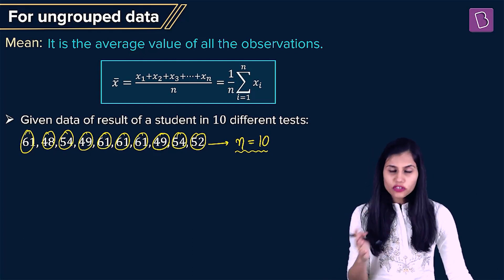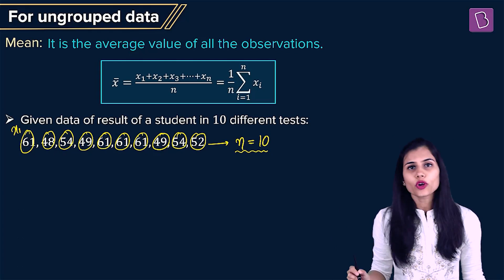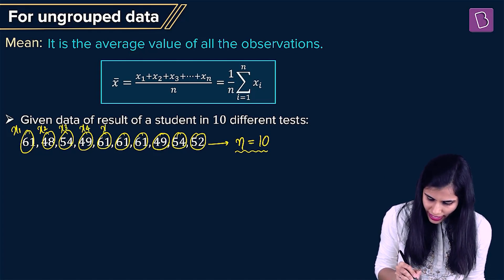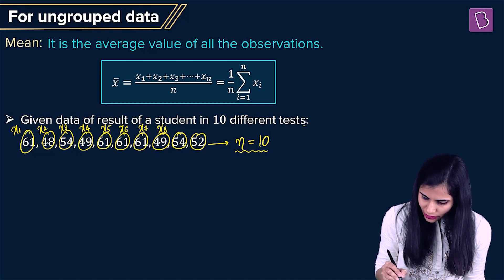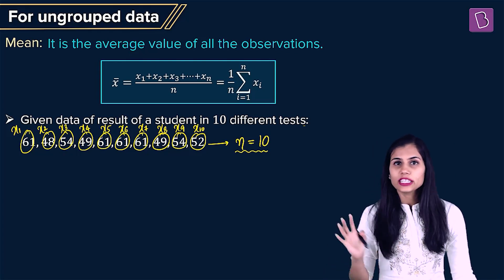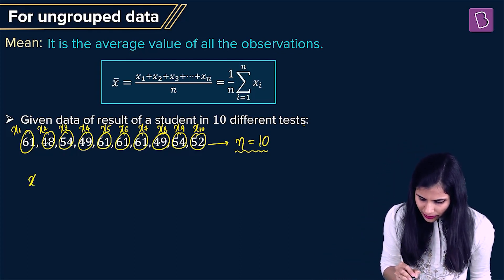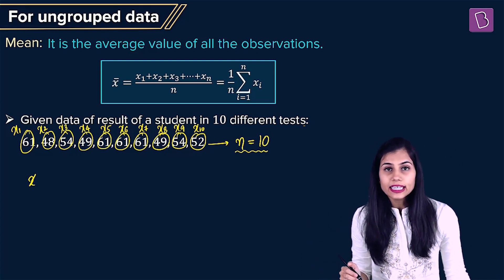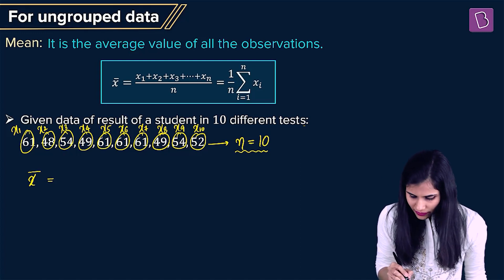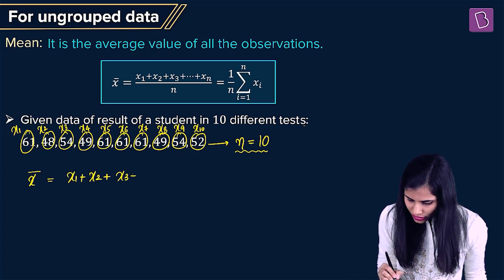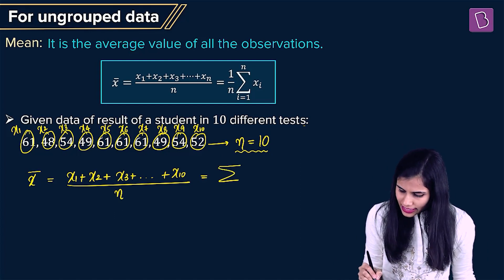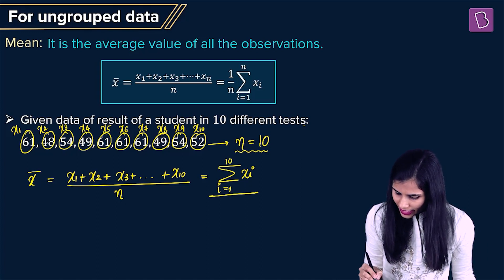Now the explicit value of each of these 10 observations: the value of the first observation x1 is 61, the second observation x2 is 48, and similarly x3, x4, x5, x6, the 7th, 8th, 9th, and 10th observations. It's like there's a random variable x taking up the values x1, x2, x3, up to x10. Then the mean of this data set, denoted by x-bar, equals the sum of all 10 observations — x1 plus x2 plus x3 and so on till x10 — divided by the number of observations. In compact form: summation of xi, i varying from 1 to 10, divided by n.